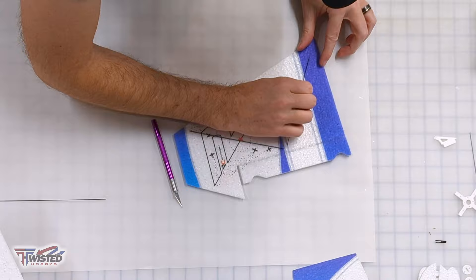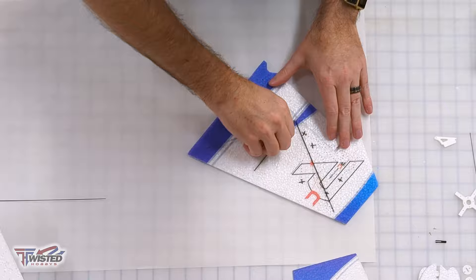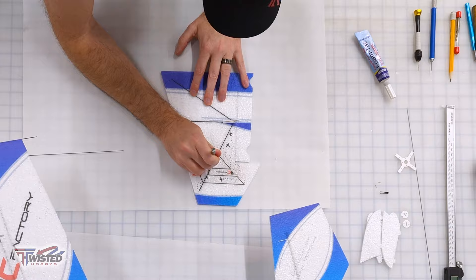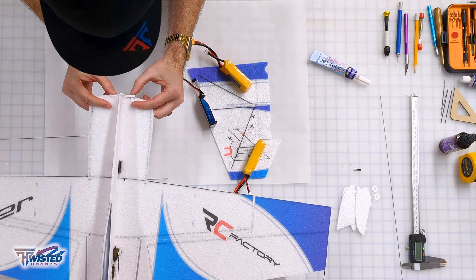And now on to the rudder. It needs three carbon fiber reinforcement pieces and a control horn. I dry fit these into place and I did need to cut the slots a little bit deeper so that they would sit a little more flush and then we fill that with some foam tack, put on the control horn and then let it dry flat.